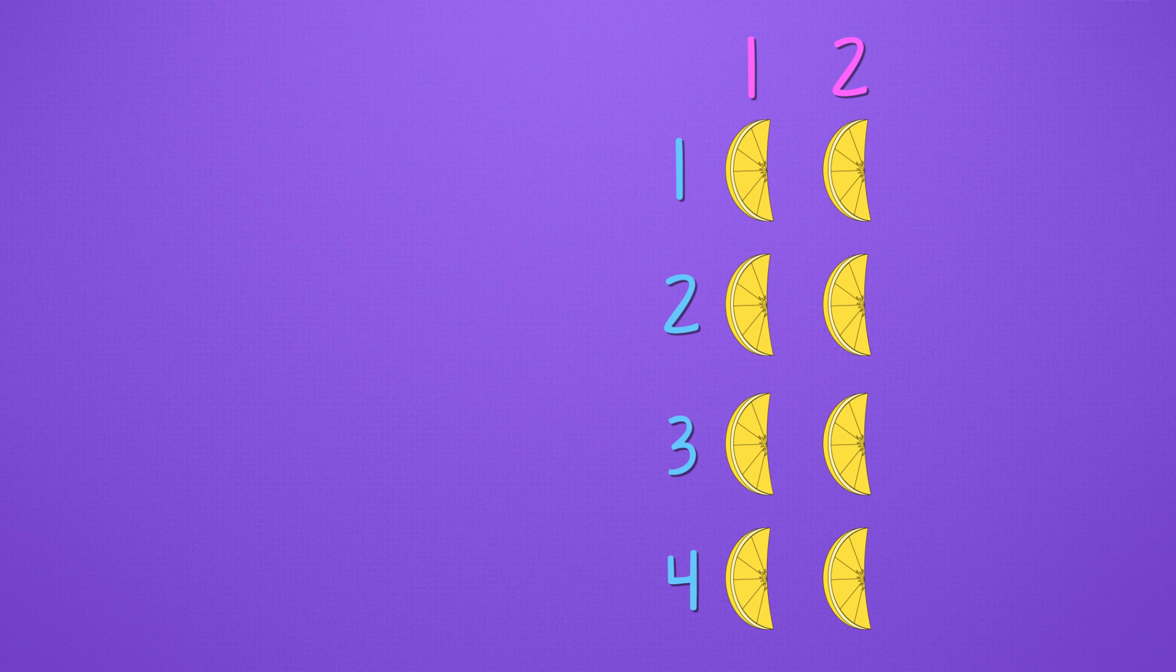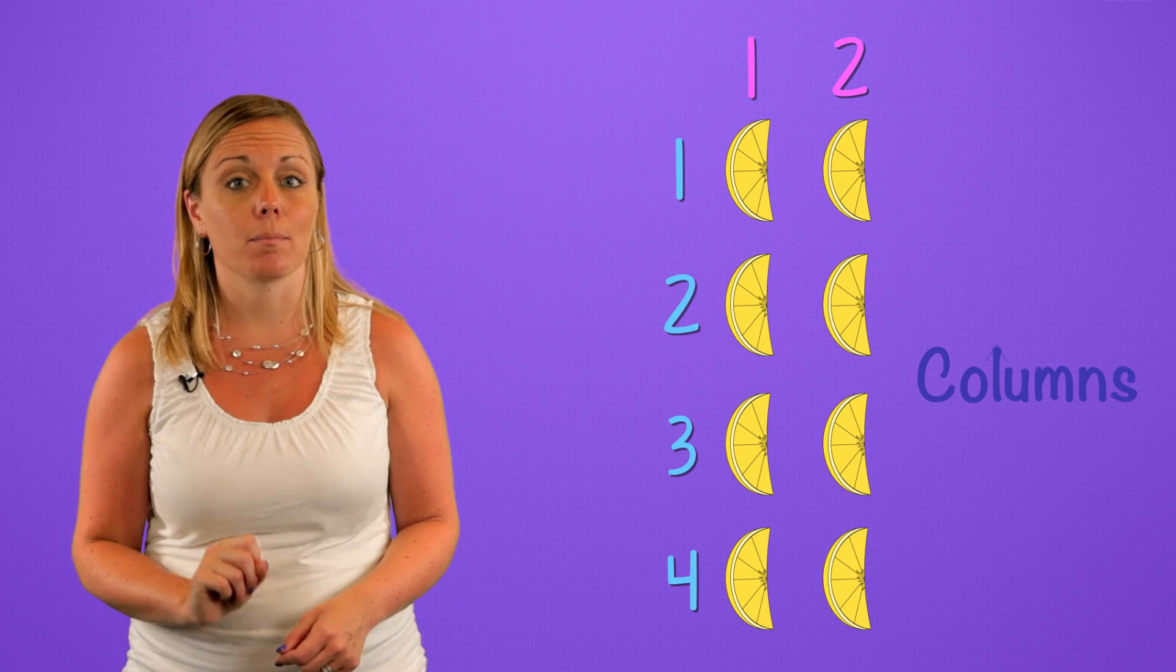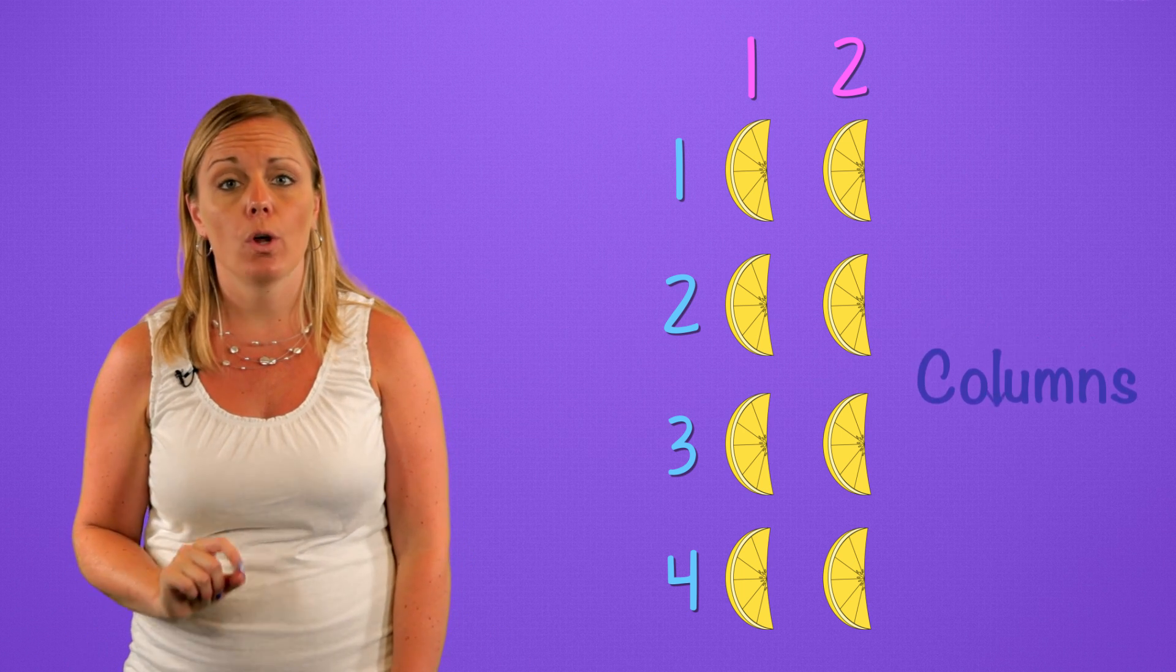Now, which number sentence represents this diagram? These columns show us the number of lemon slices Rosie used in each cup. Remember, columns go up and down. We have eight lemon slices in total.